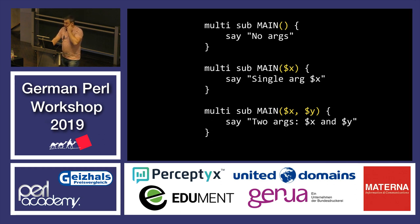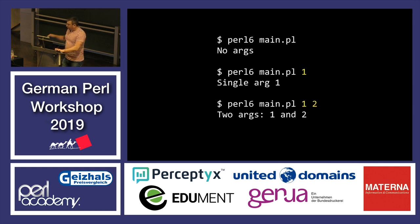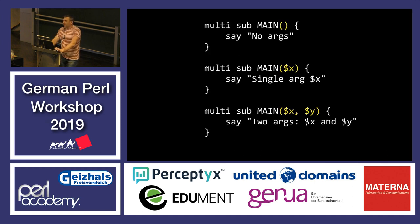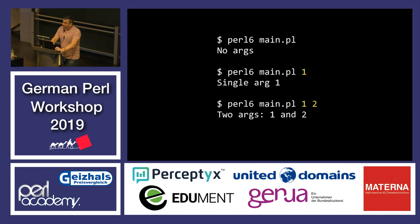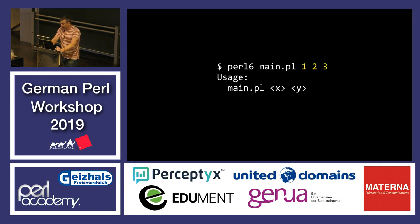The multi keyword allows you to define a few versions of the main function. Here we have three versions: one with no arguments, one with one argument, and one with two arguments. These arguments are the command line arguments supplied when you run the program. So if you run perl6 main.pl without arguments, you get the first function called — and similarly for one or two arguments. This multiple dispatch happens inside Perl 6; you don't even have to think about it.